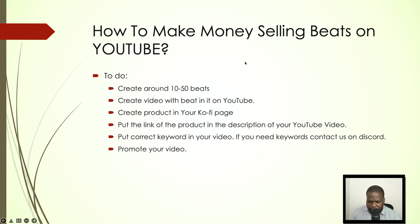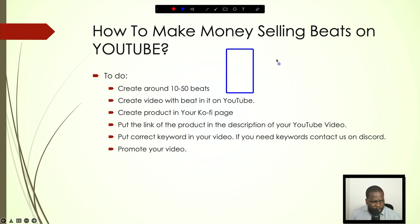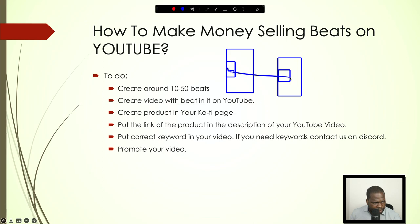So to recap: you create a YouTube channel, the YouTube channel refers to the Ko-fi page, people can download it, and you create a video. In the video, you put the link, and people can go to the Ko-fi page and buy it — and you make money. That's technically how you need to see it.